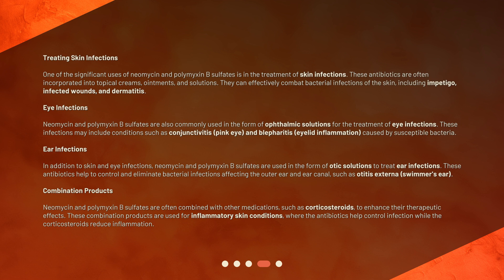Combination products: Neomycin and polymyxin B sulfates are often combined with other medications, such as corticosteroids, to enhance their therapeutic effects. These combination products are used for inflammatory skin conditions, where the antibiotics help control infection while the corticosteroids reduce inflammation.